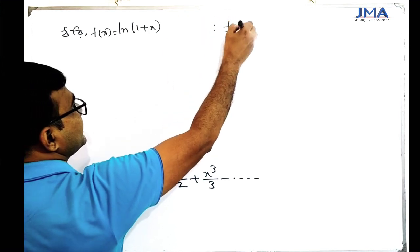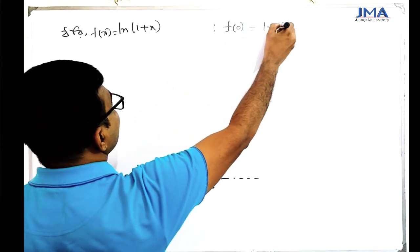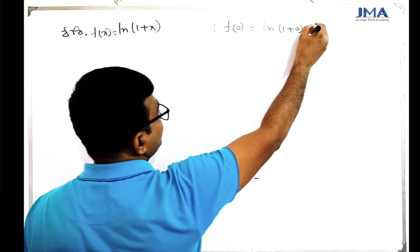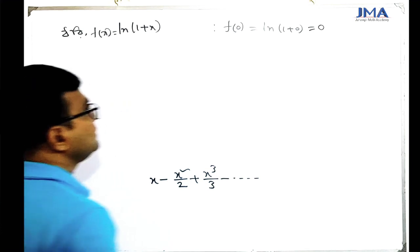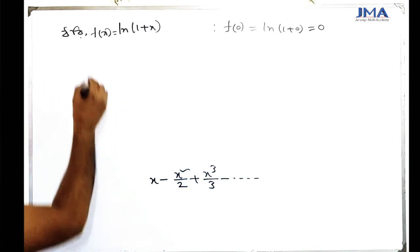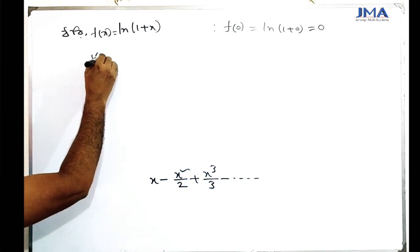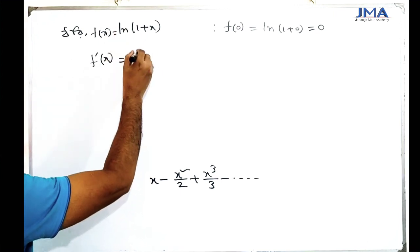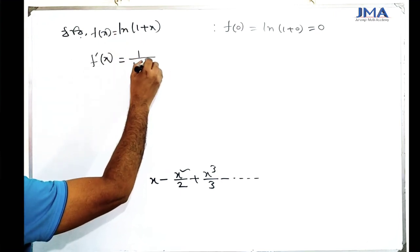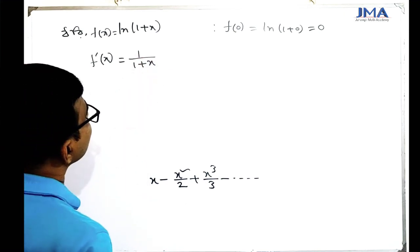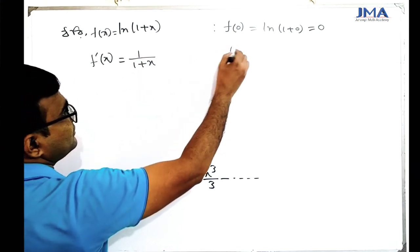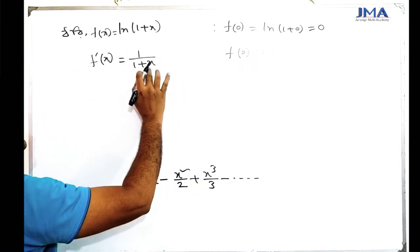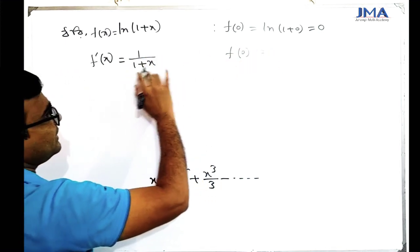At x equals 0: f(0) equals ln(1 + 0) equals ln(1) equals 0. So f(0) equals 0. The single prime and double prime values are then computed at x equals 0.